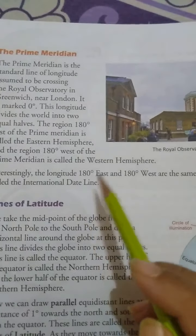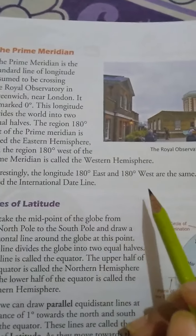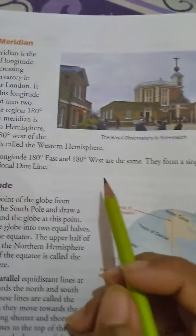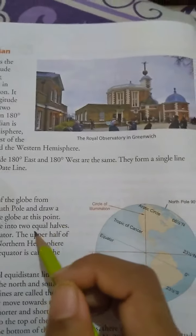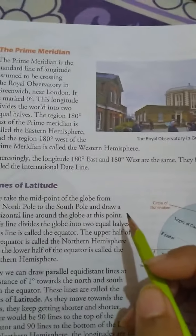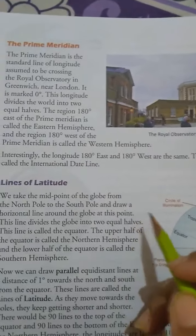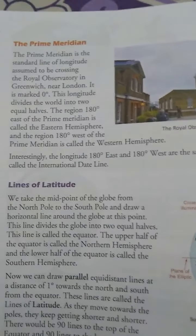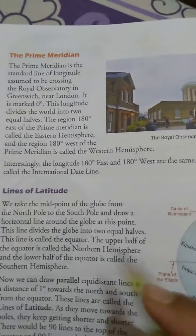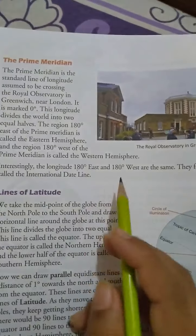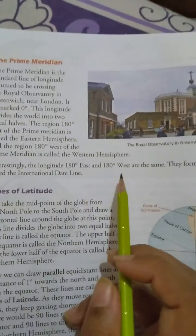Interestingly, the longitudes 180 degrees East and 180 degrees West are the same. They form a single line called the International Date Line. These two lines are the same.